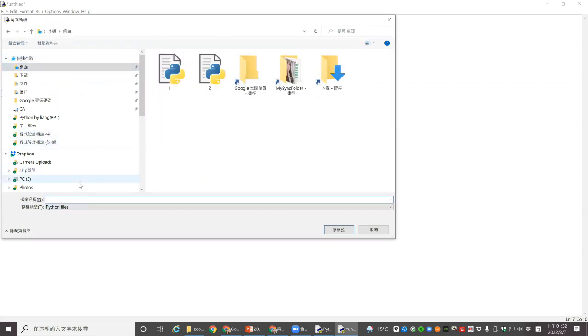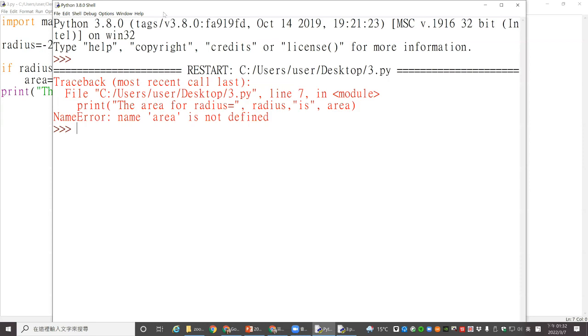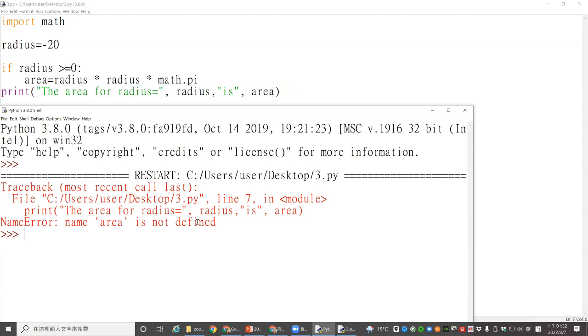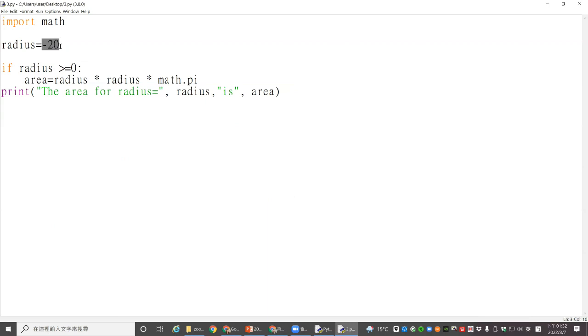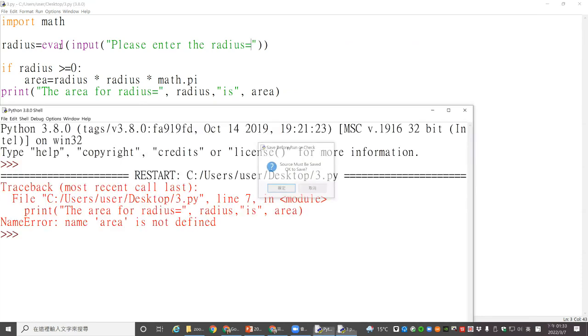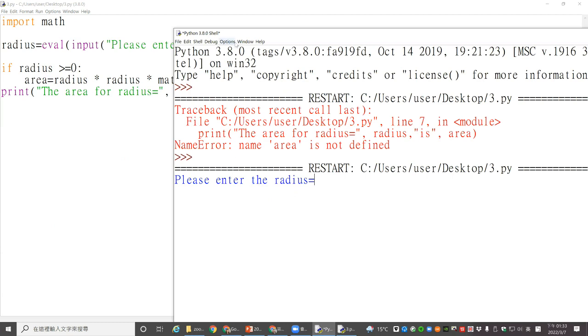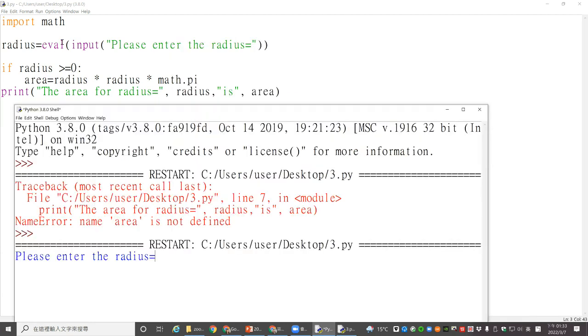And then we said if radius is larger or equal than zero, then we will compute the area. The area will equal radius multiply radius multiply math.pi. Because we use math.pi, so we need to import math. And we will print the result. The area for radius is area. But the situation is we put print here. We will see what's the result. I think we put it as number three. Syntax error. Why? Because you told us the name area is not defined. Why is it not defined? Because it cannot go to this part. The radius is minus 20.